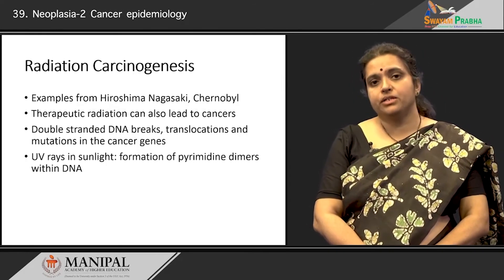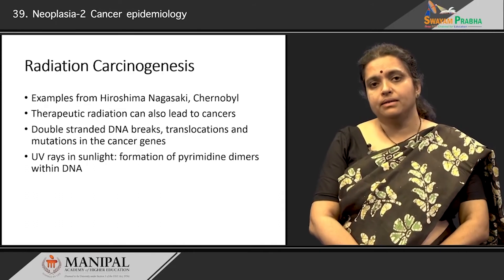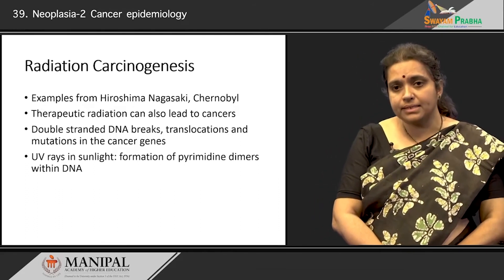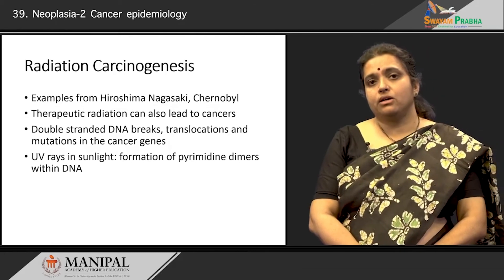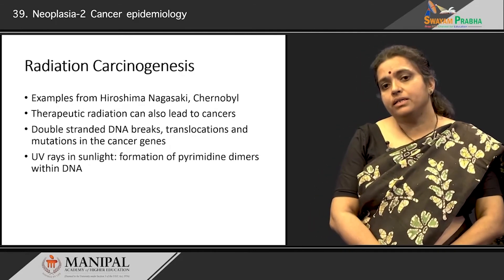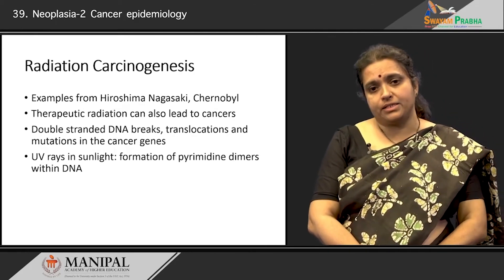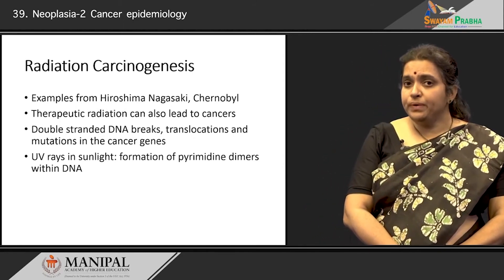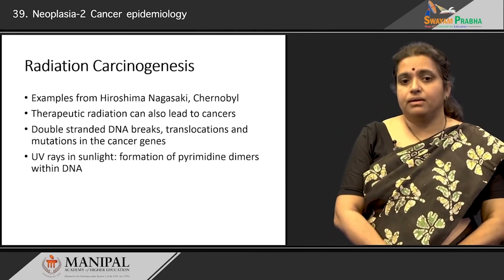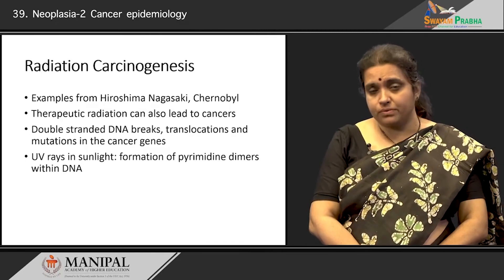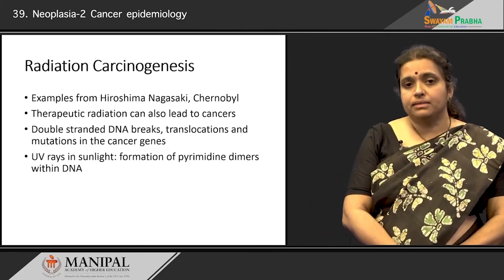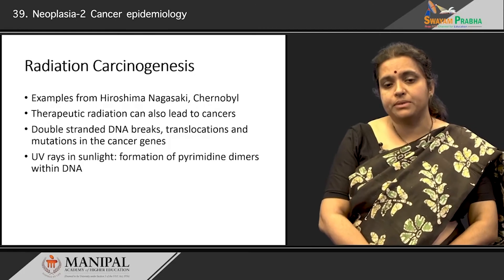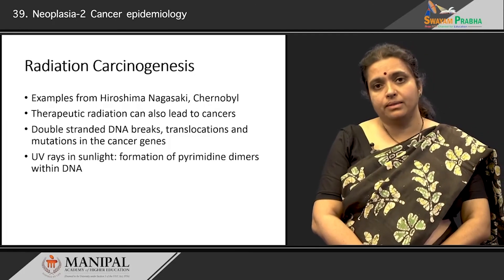How does radiation cause cancer? It causes cancer because it can cause double-stranded DNA breaks, translocations, and mutations in cancer genes. UV rays in sunlight can cause various cancers through the formation of pyrimidine dimers within the DNA.